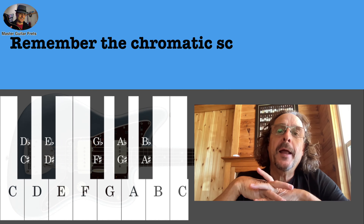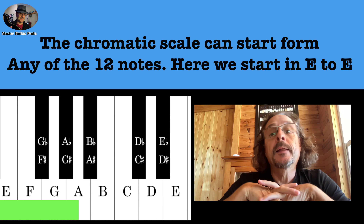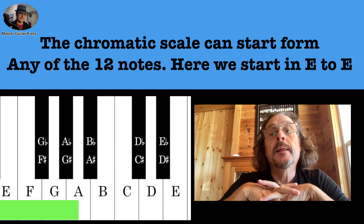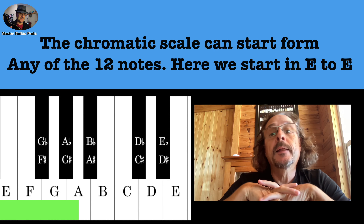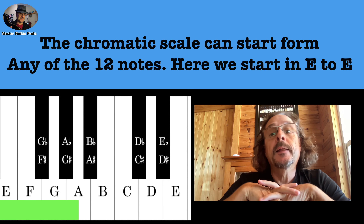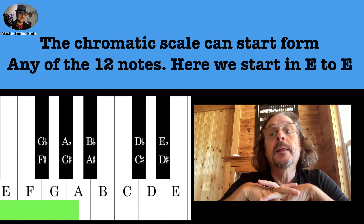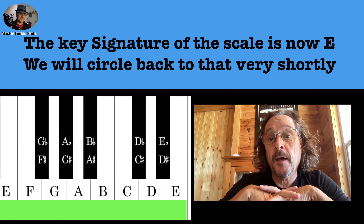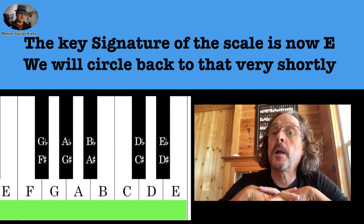Remember the chromatic scale we learned in lesson one. The chromatic scale can start from any of the twelve notes. Here is a sample from E to E. The key signature of the scale is now E because we start at E and we end at E. The same concept applies when we use any kind of musical scale and determines the key signature of the scale, the song, or the piece of music.